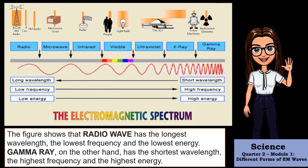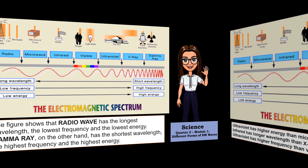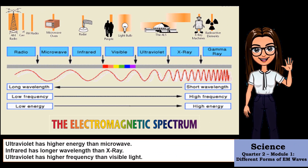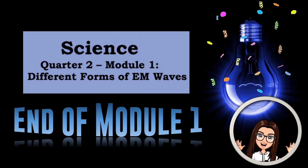Gamma rays, on the other hand, have the shortest wavelength, the highest frequency, and the highest energy. The figure also shows the relationship of wavelength, frequency, and energy present in the electromagnetic spectrum. Some examples of these relationships are: ultraviolet has higher energy than microwave; infrared has longer wavelength than X-ray; and ultraviolet has higher frequency than visible light.